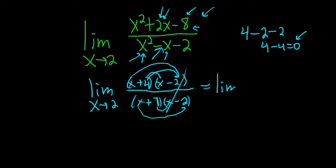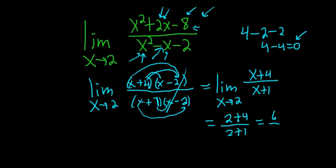So we get limit as x approaches 2 of x plus 4 over x plus 1. Now we can plug in 2 for all the x's. We get 2 plus 4 over 2 plus 1, which equals 6 over 3, which equals 2.